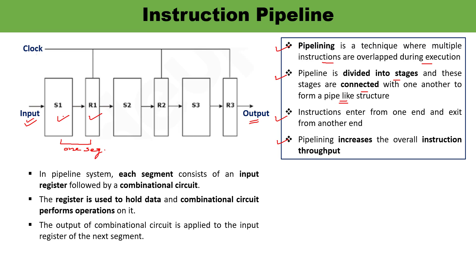There is one more very interesting example of pipelining which can be observed in a modern-day assembly line setup in factories. For example, in the car manufacturing industry, there is a huge assembly line where robotic arms are set up at each point to perform certain tasks, and then the car moves ahead to the next arm. One by one, each function is performed and finally the entire task is done.